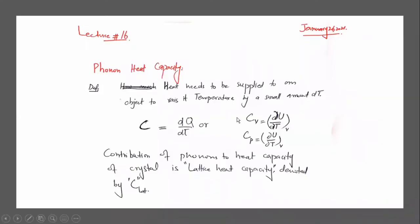Our topic is phonon heat capacity, which we will discuss according to Planck's distribution. Next we will see how Einstein did that and the Debye model. Heat capacity is something like: when you provide heat to any material, the amount of heat required to raise the temperature of that material by a certain amount is your heat capacity.